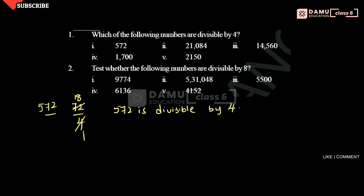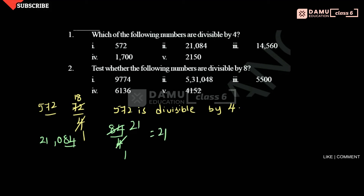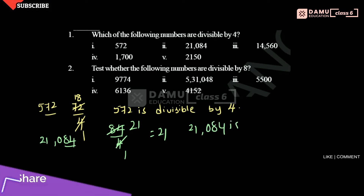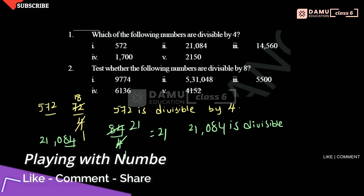Next one: 21,084. The last two digits are 84. Is 84 divisible by 4 or not? 4 times 21 is 84, so yes, it is divisible. Therefore, 21,084 is divisible by 4.